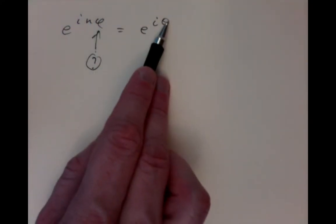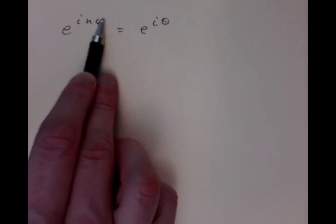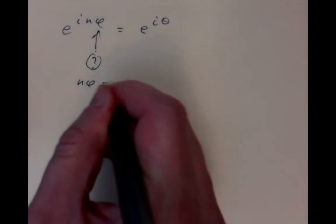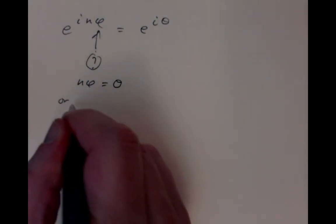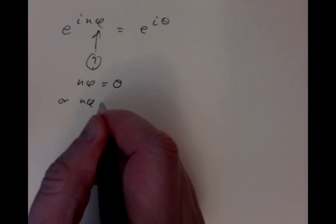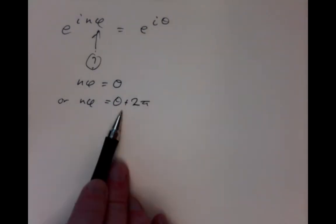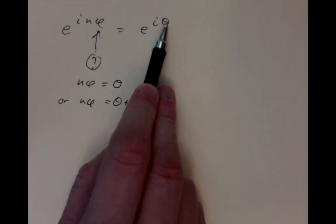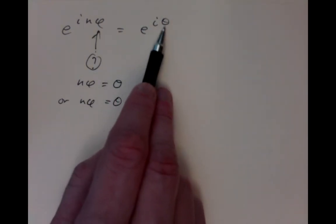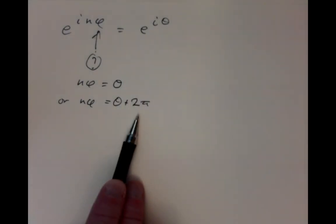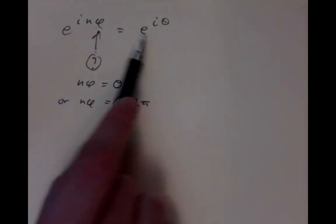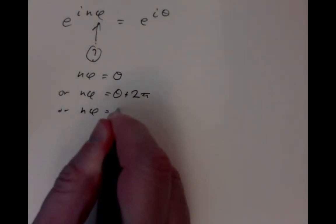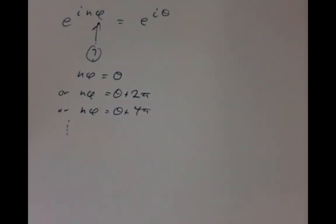It means that if you rotate by an angle of theta, it's the same as if you rotated n times by an angle of phi. You could have n phi equal to theta, or n phi equal to theta plus 2 pi. If we rotate by 2 pi, it's as if we haven't rotated at all. So n phi could be theta, or theta plus 2 pi, or theta plus 4 pi, dot dot dot. We have all these possibilities.